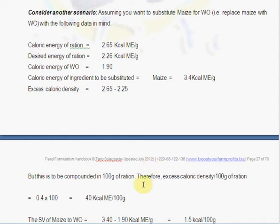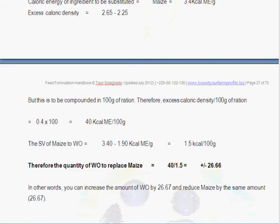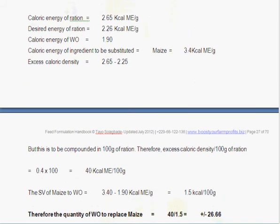Understanding the manual computation process and the reasoning behind it, the logic, enables you to use the software or the computer much more intelligently and successfully. This is to be compounded in 100 grams of ration, therefore the excess calorie density per 100 grams of ration will be the 0.4 we had multiplied by 100, which gives us 40 kilocalories of metabolizable energy per 100 grams of ration.